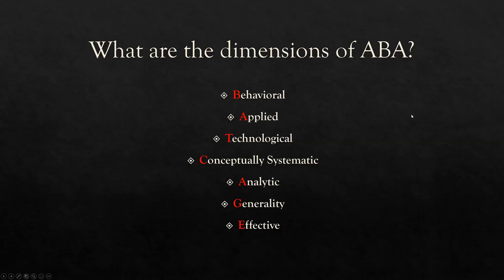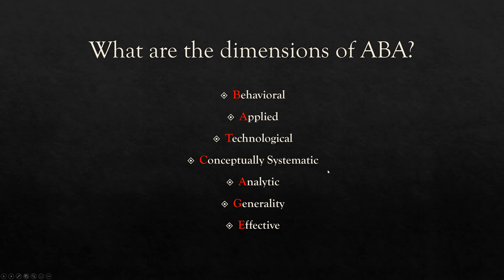First things first, what are the seven dimensions of ABA? There are different ways to remember them. My favorite way is the acronym BATCAGE: Behavioral, Applied, Technological, Conceptually Systematic, Analytic, Generality, and Effective. That's the first step — you have to learn what the seven are. Don't get them confused with the attitudes of science or other categories we have as we're learning about ABA. These are what we consider the dimensions.